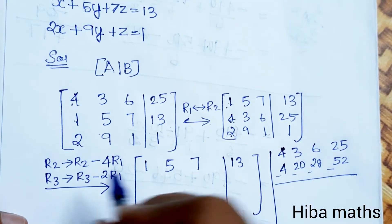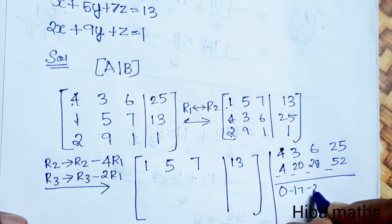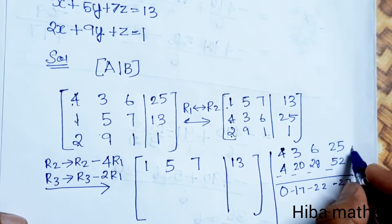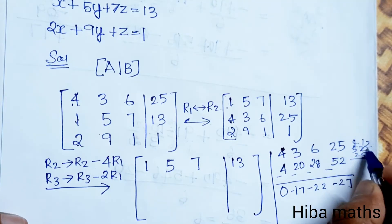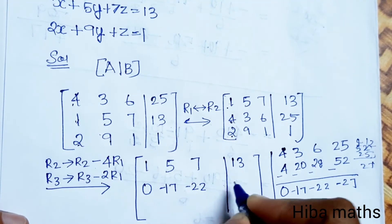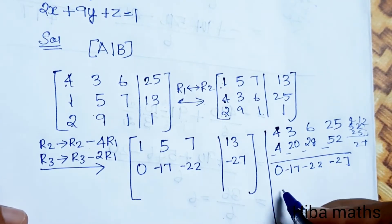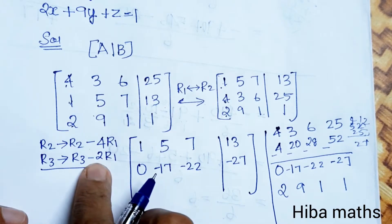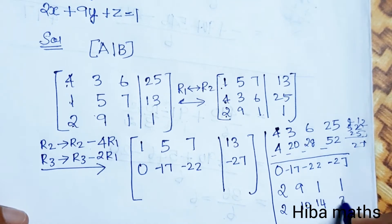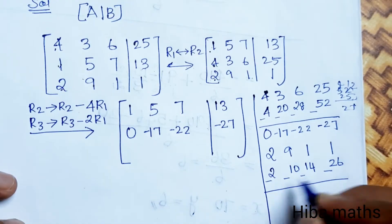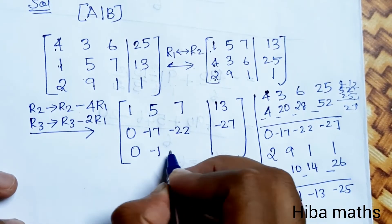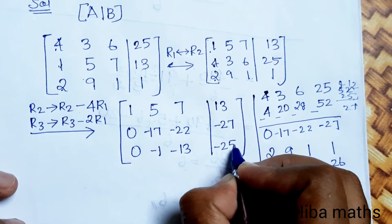We get minus 17, minus 22, minus 27 for R2. For R3 minus 2 times R1: R3 is 2, 9, 1, 1. Two times R1 is: 2×1=2, 2×5=10, 2×7=14, 2×13=26. So the new R3 is: 0, 9-10=-1, 1-14=-13, 1-26=-25. New R3: 0, -1, -13, -25.